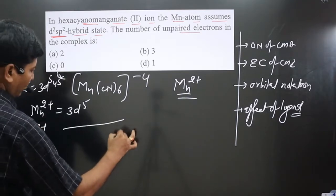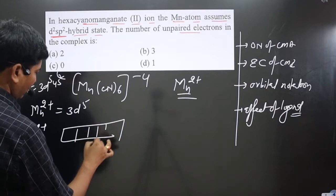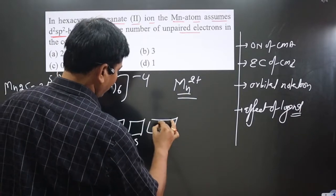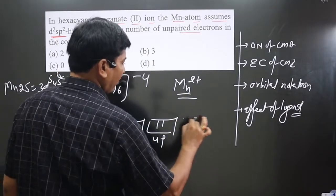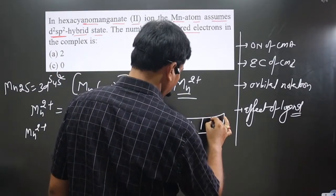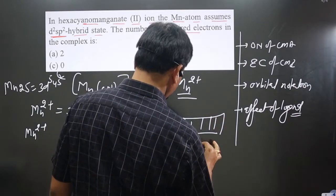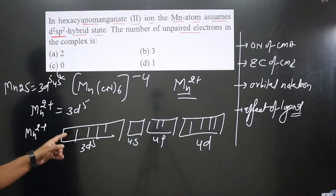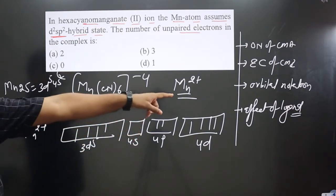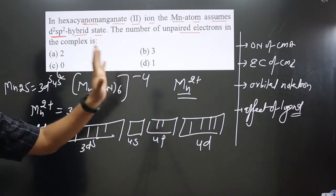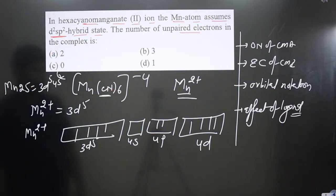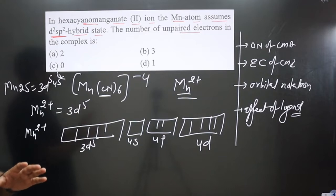Next we have orbital notation. Write orbital notation for Mn²⁺: we have 3d orbital 1, 2, 3, 4, 5—3d has five electrons. 4s orbital completely vacant, 4p orbital completely vacant, and 4d orbital also completely vacant. Before filling these electrons in the orbitals we consider the effect of ligand. Cyanide ion is given here—it is considered a strong field ligand.